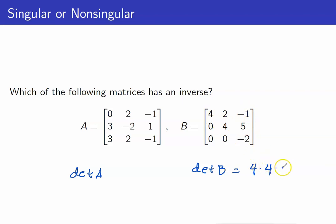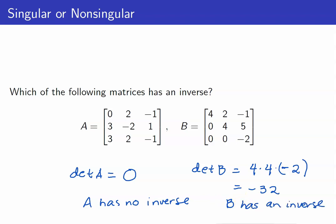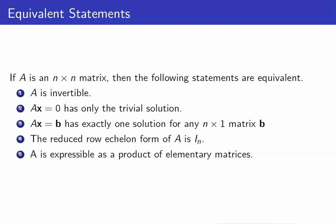The determinant of B is 4 times 4 times negative 2, which equals negative 32. However, for the determinant of A, notice that the third row is simply a scalar multiple of the second row. If that is the case, the determinant will be equal to 0. So since the determinant of A equals 0, A has no inverse, whereas B has an inverse. We can add to the list of equivalent statements for invertibility: the determinant of A is not equal to 0.